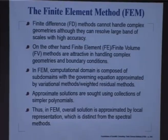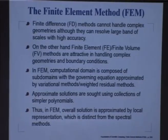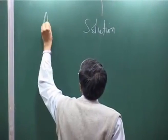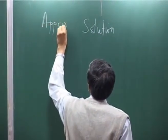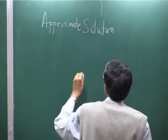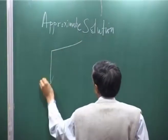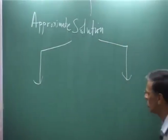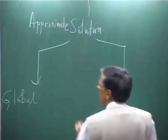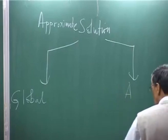One of the things that distinguishes FEM and FDM versus, say, spectral method is the solution method itself. When we are looking for a solution, we actually start off with some kind of approximation. Approximate solutions can be broadly classified into two distinct categories: one is the global solution, and another is the local solution.